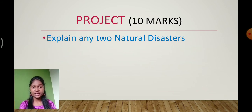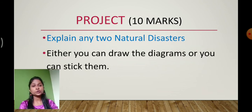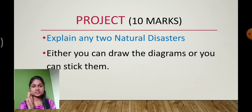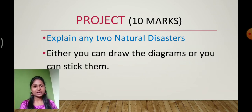You have to gather information about any natural disaster and write it on chart paper. When you write the information regarding any type of natural disaster, you have to draw or stick the respective images. For example, if you are explaining about the earthquake, then the related diagram you have to stick there. If the diagram is not available, you can even draw it. Choice is completely yours.